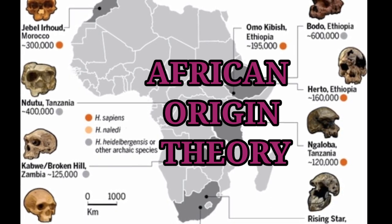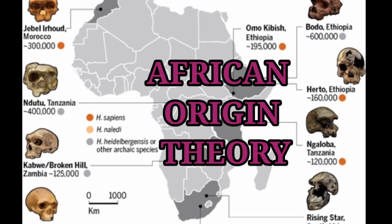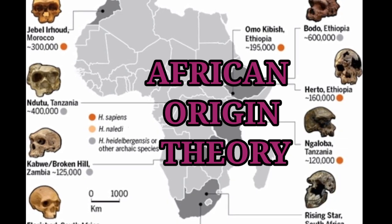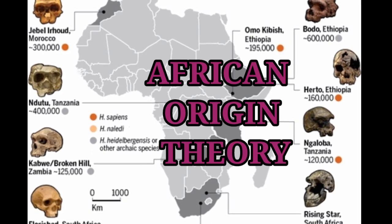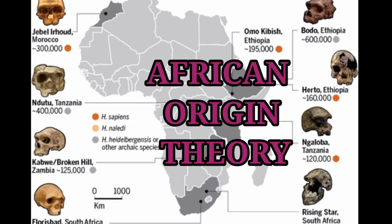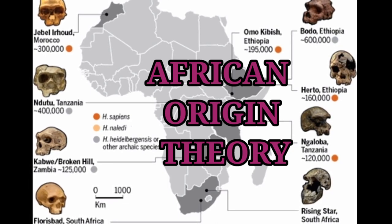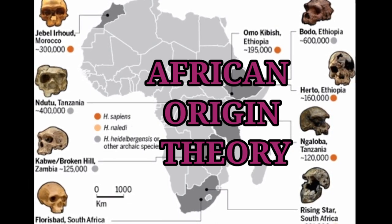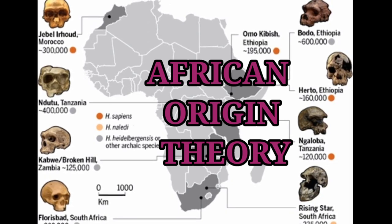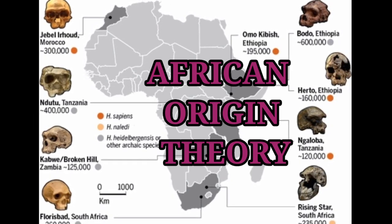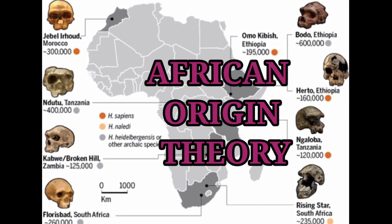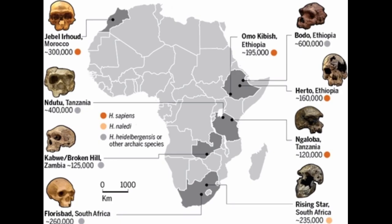The discovery of fossils of early human species in Africa, and the genetic and anatomical homogeneity among modern humans in all parts of the world, are evidence for this theory. According to this theory, modern humans emerged only in Africa.